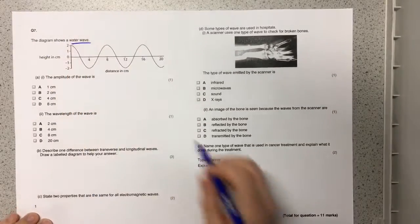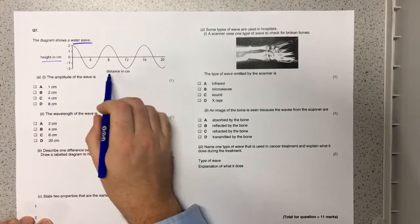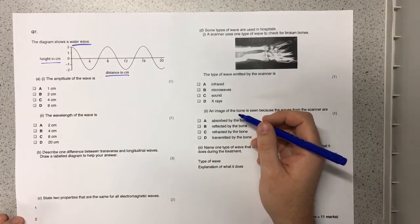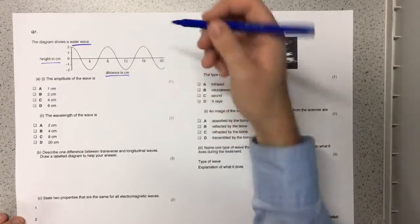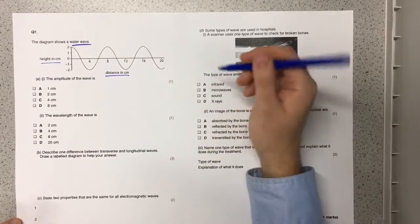This question shows a diagram of a water wave. You can see here the y-axis is the height in centimeters and the x-axis is the distance in centimeters. When you see a diagram like this it's really important to think about firstly what is it telling you.